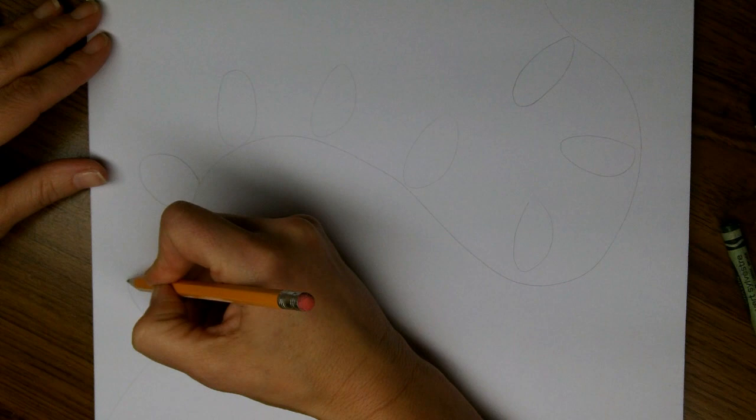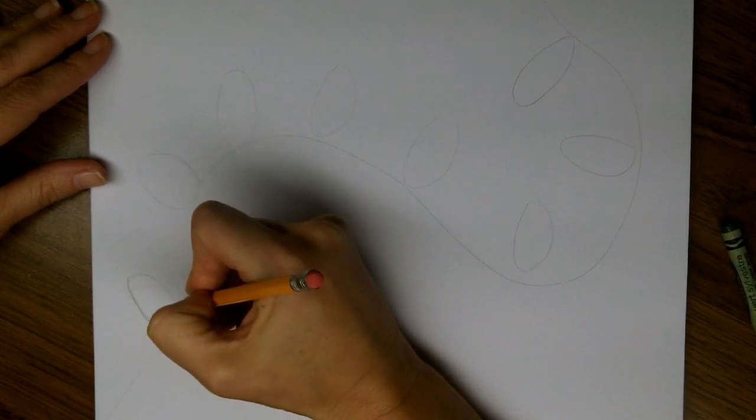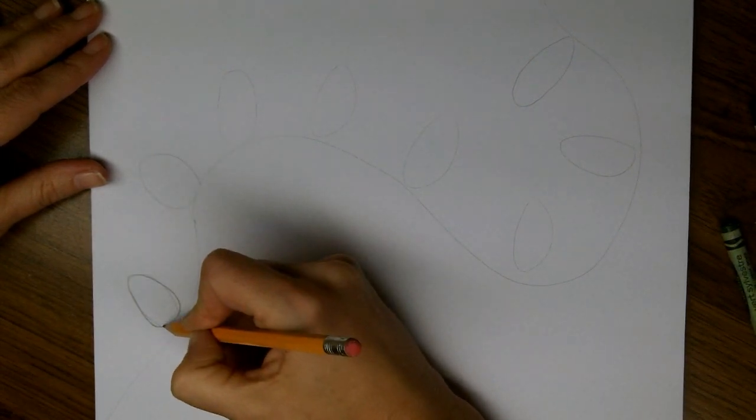And now we're going to draw the shape of the light. It's going to be an oval, more of an egg shape, smaller at the top and thicker at the bottom.